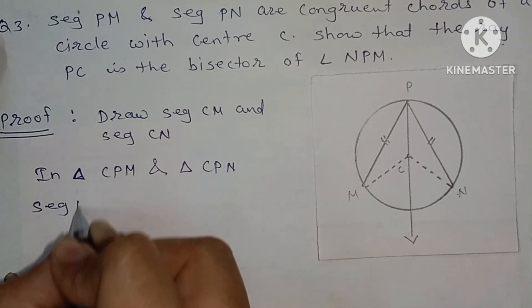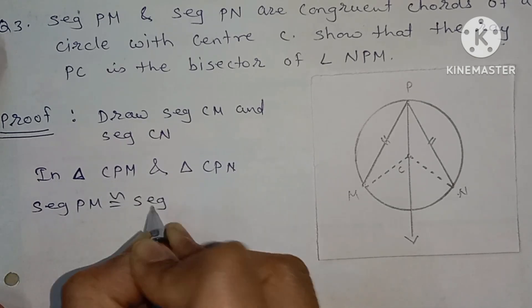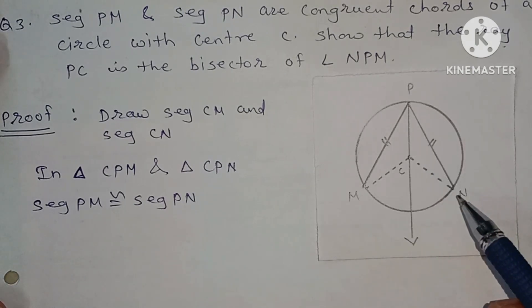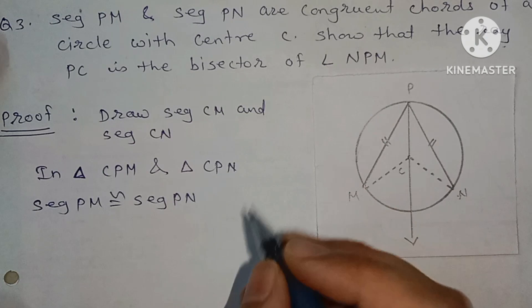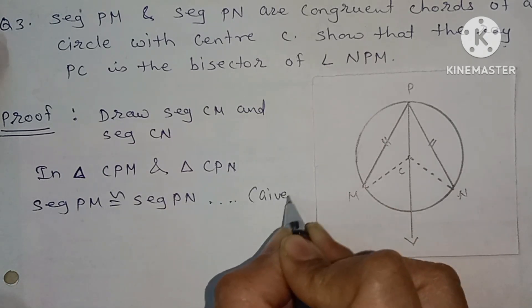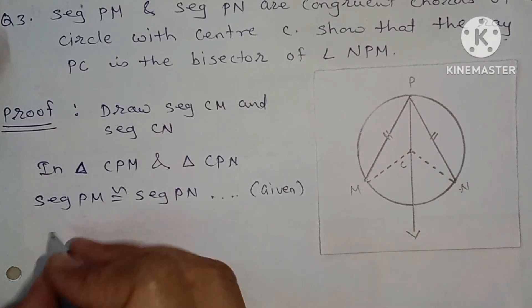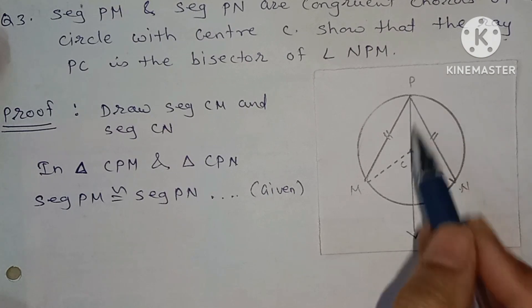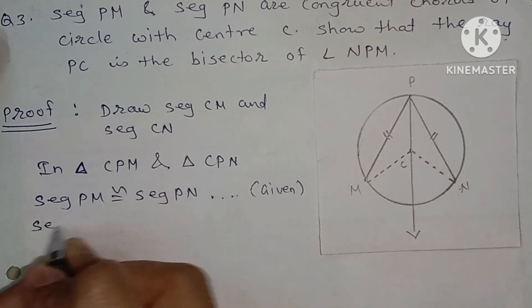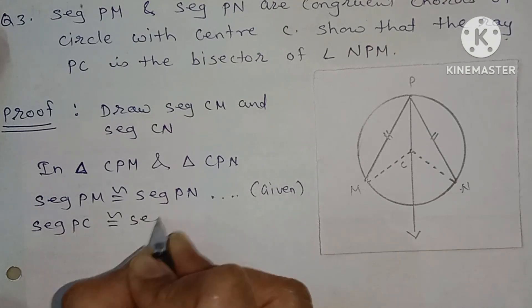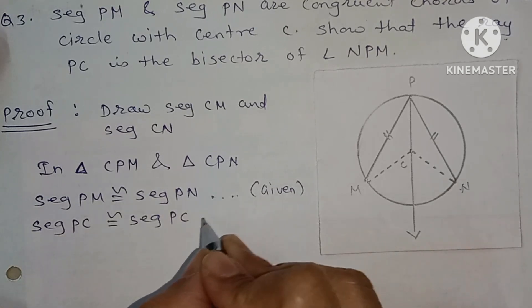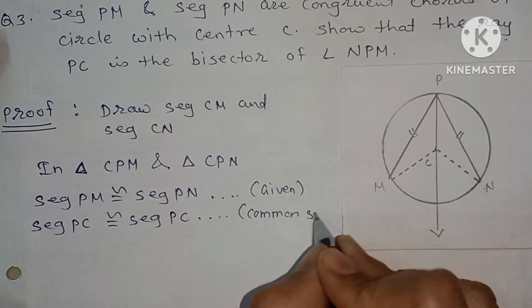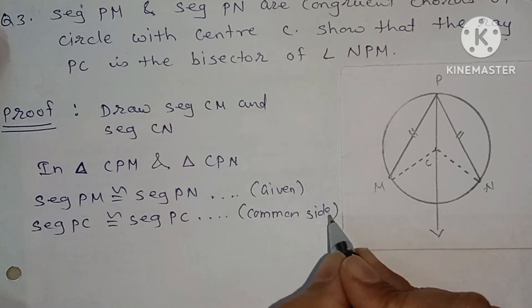Segment PM is congruent to segment PN — this is given, as they are congruent chords. Segment PC is congruent to segment PC — this is the common side.